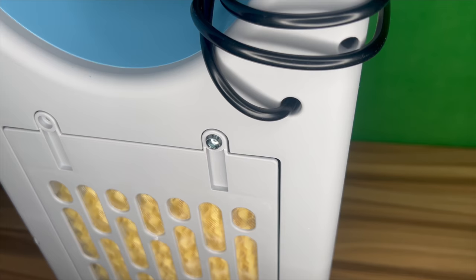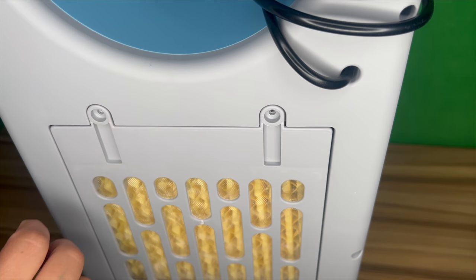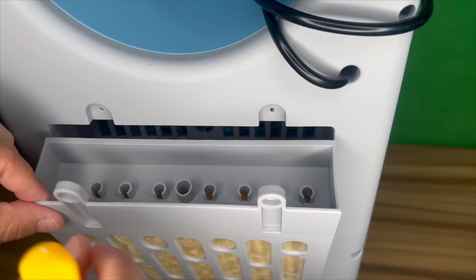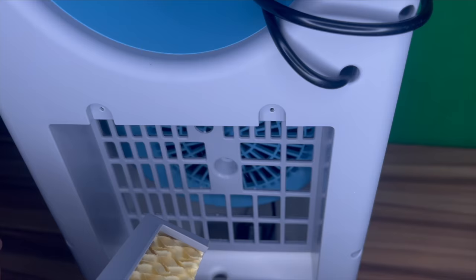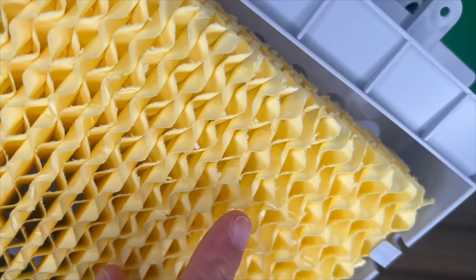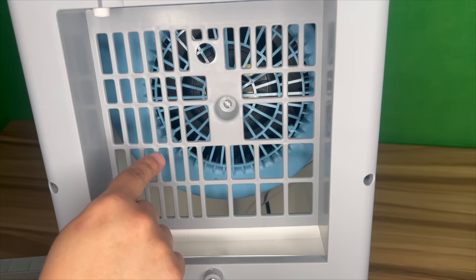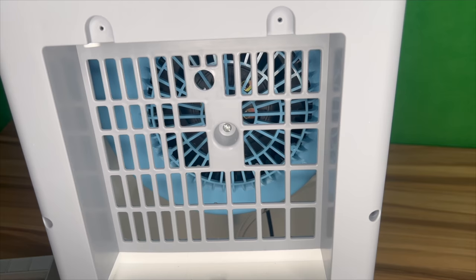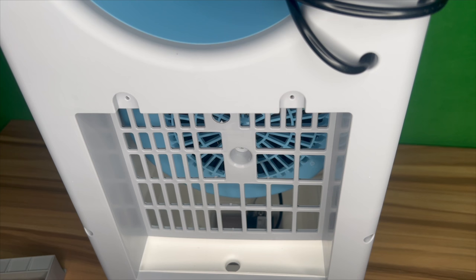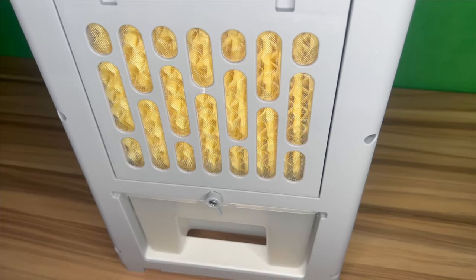It comes with the pad. We're going to unscrew this so I can show you what it looks like. This is a mesh pad just like any other evaporative cooler. Back here you can see that the motor is exposed right here, and this is where the water will dribble down to wet the pads so the pads can blow nice and cold.